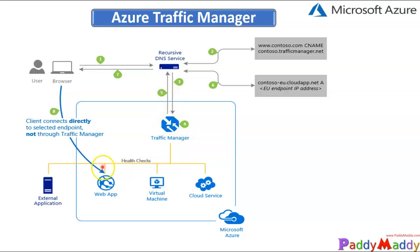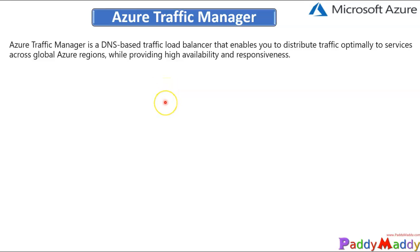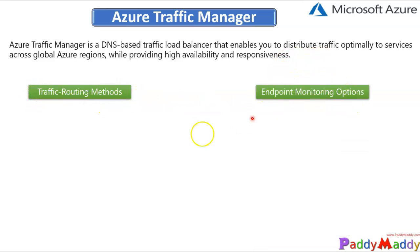Traffic Manager will reach the appropriate web app, send back the information saying you should go to this web app, and the client connects directly — with or without Traffic Manager involvement depending on configuration. With Microsoft Azure Traffic Manager, you have two different options: the traffic routing method and the endpoint monitoring options, each containing different methods.